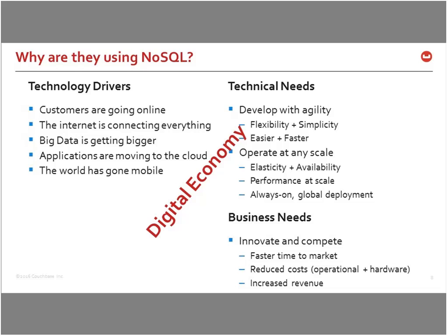These changes in technology and customer behavior are driving companies to examine their infrastructure. The technical changes are about how fast can I build and innovate applications, and how fast can I change their operational characteristics? Think about Pokémon Go or Walmart — they need to go from a standing start to huge scalability in days or weeks. This is something relational databases were not well designed to handle.